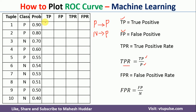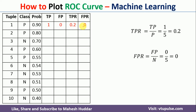Now we try to calculate these values. For the first tuple, the probability is 0.90. We consider this as the threshold. If the calculated probability is 0.90 or more, the tuple is classified as positive. Since this is the only tuple with probability 0.90, it is classified as positive. The example is positive and classified as positive, meaning it is a true positive. So TP = 1 and FP = 0. TPR = 1/5 = 0.2 and FPR = 0/5 = 0.